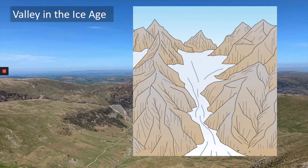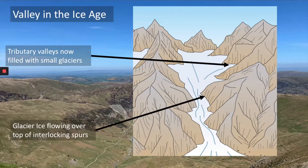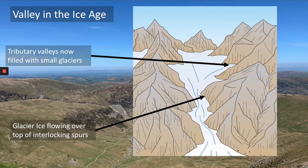Our valley would look like this — the tributary valleys that would have flowed into the main river valley are now full of ice too. The interlocking spurs are now covered with glacier ice, which could be a clue to what happens to them later when the ice continuously flows over them. That's our river valley in the ice age. Now let's go and have a look at what features this glacier will form in the main valley.